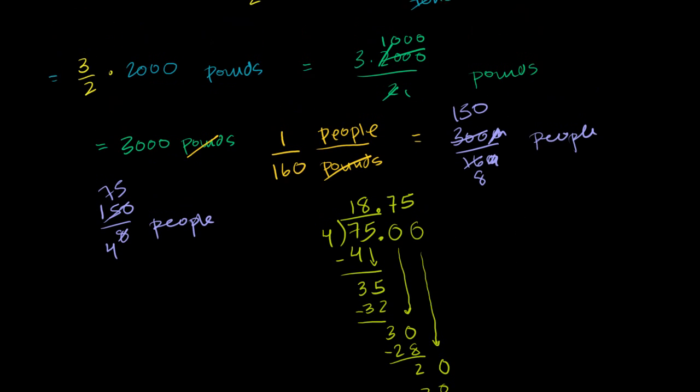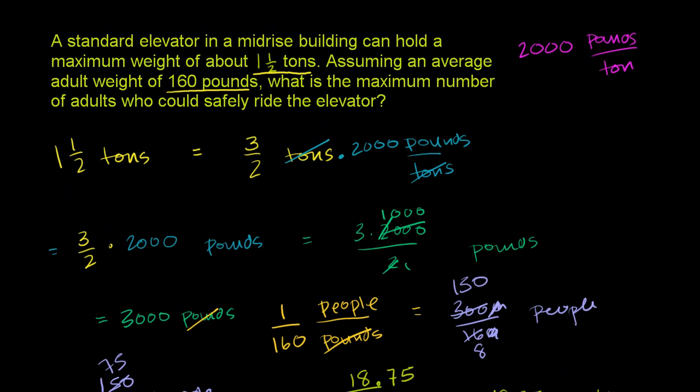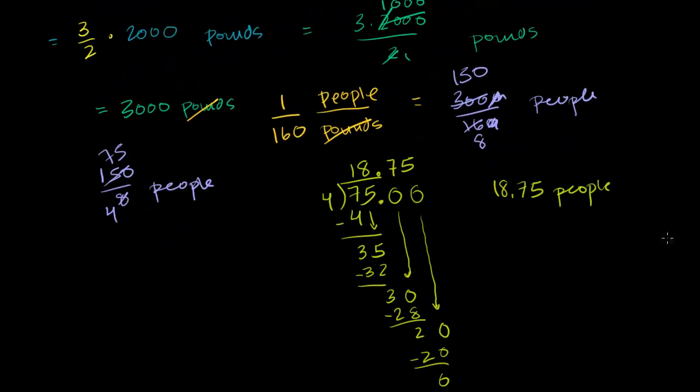This expression, 3,000 divided by 160, or 150 divided by 8, or 75 divided by 4, all turns out to be 18.75 people. 18.75 average 160-pound people would weigh 3,000 pounds. Since you can't have 3/4 of a person, the maximum number is going to be 18. If you have 19 average weight adults, you're going to be too heavy and the elevator will fall or something.